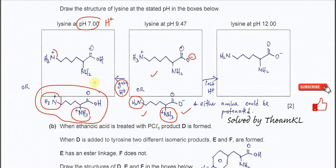At pH 7, the carboxylate gains a proton to form the carboxylic acid, while one amine group may stay as amine. This is the better answer because pH 7 is relatively acidic with quite a number of H⁺ present, so the carboxylate gains a proton and the other amine group also gains a proton to form ammonium.